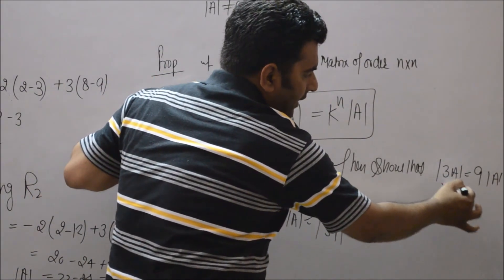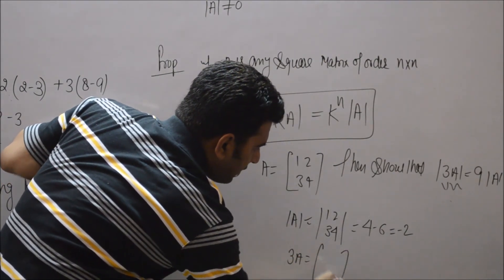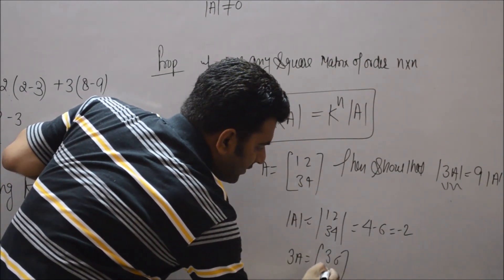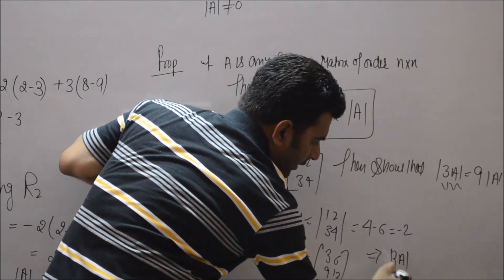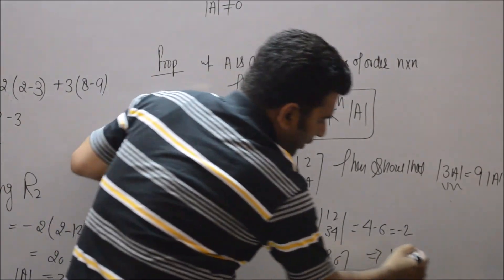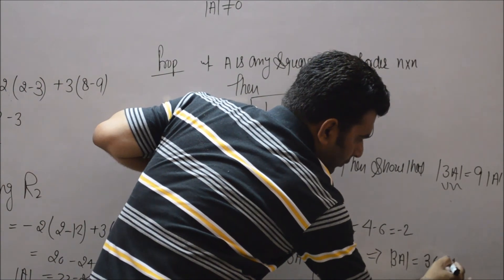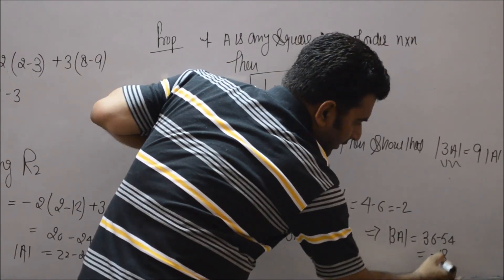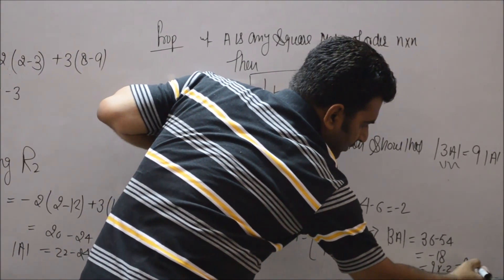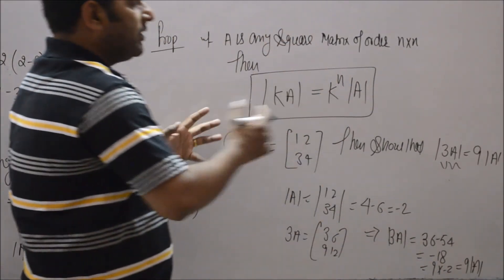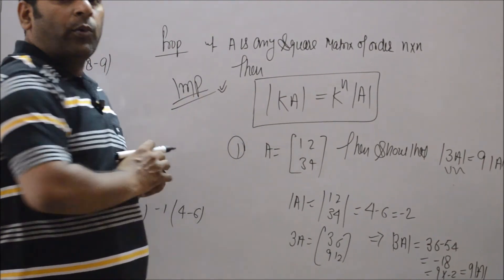To find the left-hand side, compute 3A = [3, 6; 9, 12]. Then det(3A) = 3×12 − 6×9 = 36 − 54 = minus 18. This can be written as 9 × (minus 2), which is 9 times det(A). So this property is verified and very important for board exams.